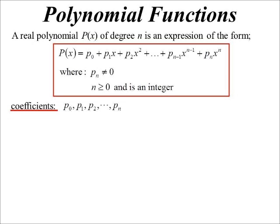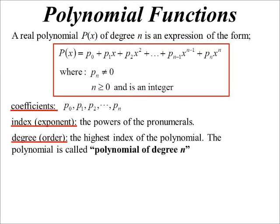P0, P1, P2, they're called coefficients. The index or the exponent, another word for the powers of the pronumerals. Degree - sometimes you'll hear people use the word order instead of degree. It means the same thing. Polynomial of degree, polynomial of order. And basically, it's the highest power, the highest index.